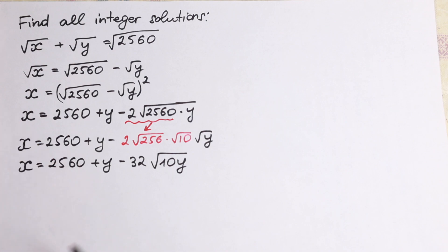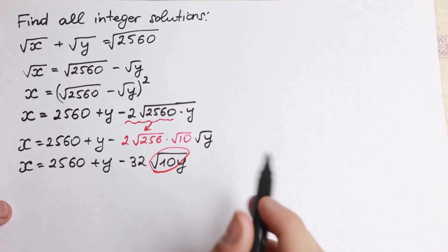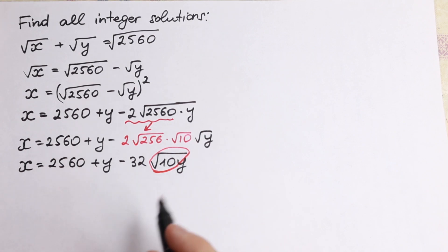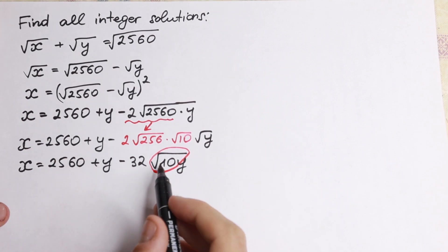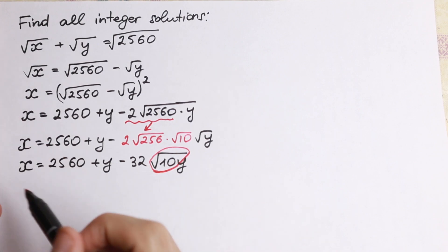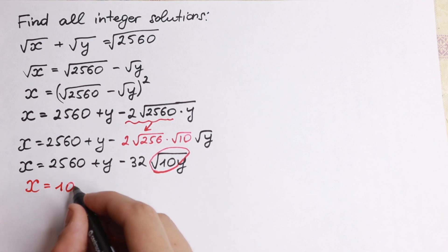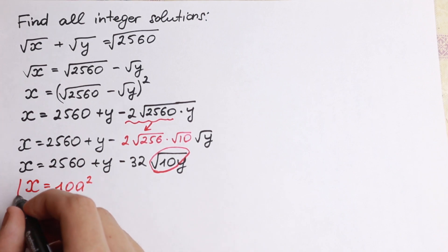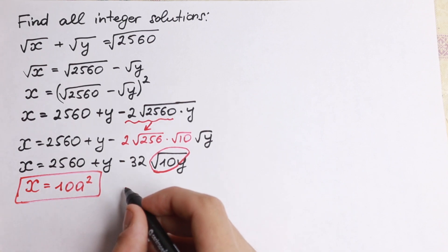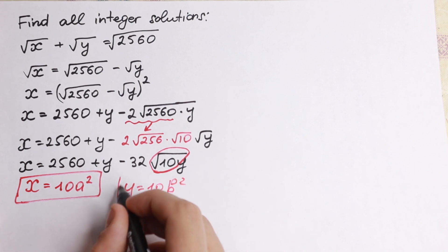Now we look closely at the square root of 10 — we cannot simplify it further. So we need a substitution that will cancel this square root of 10. The substitution is: x equals 10a² and y equals 10b².